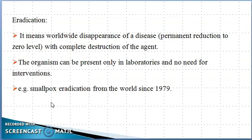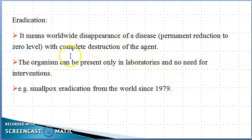Eradication means the worldwide disappearance of disease — a permanent reduction to zero level. Elimination we said is minimum level but not zero; to get to zero is eradication. This means the disease is completely gone. For example, smallpox was eradicated from 1979 all over the world. If there were to be even one case, we would call it epidemic because it is not expected. Currently, the organism only exists in laboratories for research purposes.